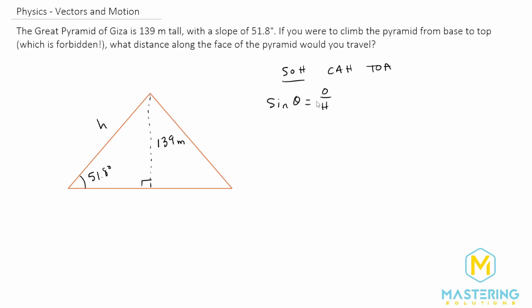We need to isolate the hypotenuse in this case. So we need to multiply both sides by H. So now we have opposite is equal to H sine of theta. But now we need to divide both sides by sine theta.